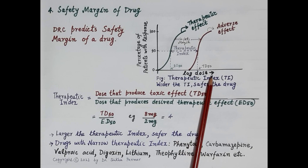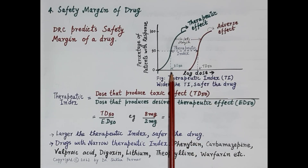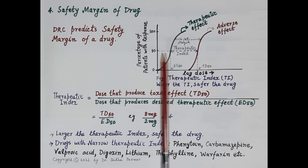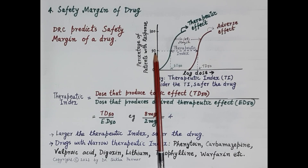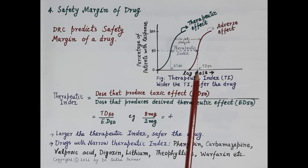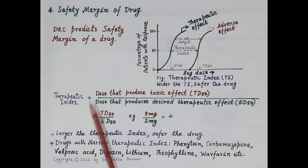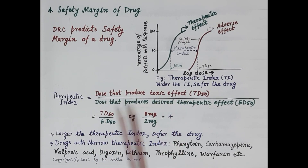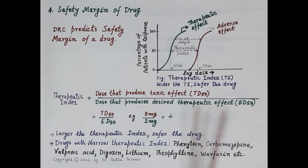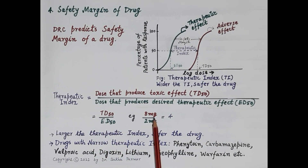ED50 (effective dose 50) is the dose that produces the desired therapeutic effect in 50 percent of the population, while TD50 (toxic dose 50) produces toxic effect in 50 percent of the population. The therapeutic index is the ratio of TD50 to ED50. For example, if the toxic dose in 50 percent of the population is 8 mg and the effective dose is 2 mg, the therapeutic index is 4.